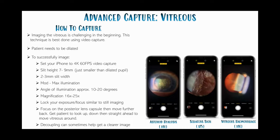Imaging the vitreous is also challenging — best done with video capture, and the patient must be dilated. Set your iPhone to the highest video settings, slit height seven to nine millimetres just smaller than the dilated pupil to avoid corneal reflections, slit width two to three millimetres, moderate to max illumination, angle of illumination ten to twenty degrees, magnification 16 to 25 times. Lock your exposure and focus, then focus on the posterior lens and move further back into the vitreous. Ask the patient to look up, down, and straight ahead to move the vitreous around for imaging. The three still examples shown are asteroid hyalosis, Schaefer's sign, and a vitreous haemorrhage.